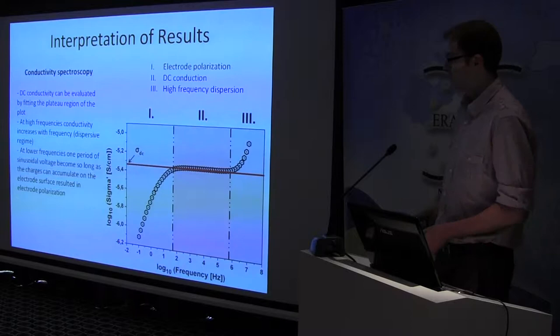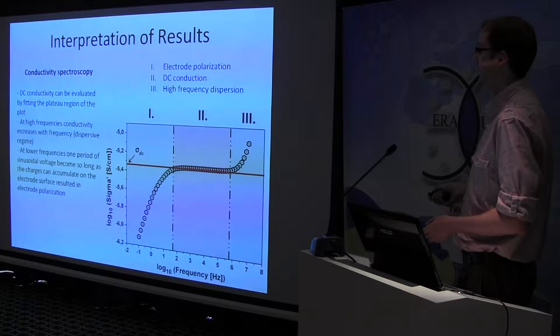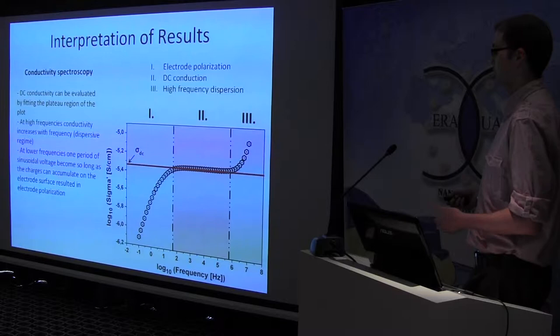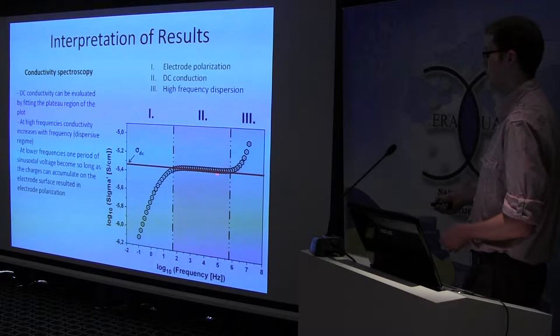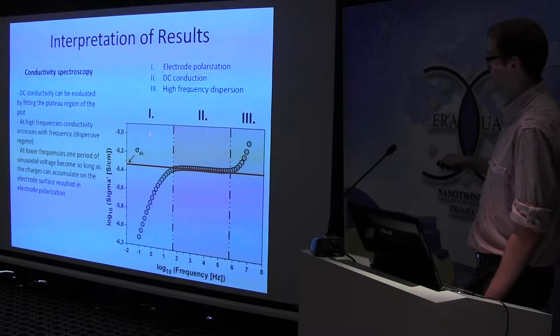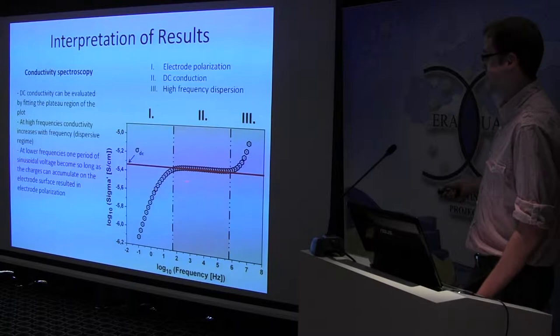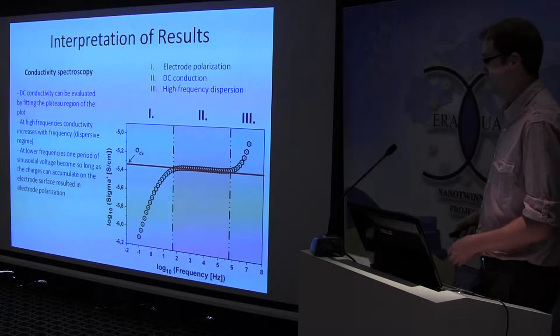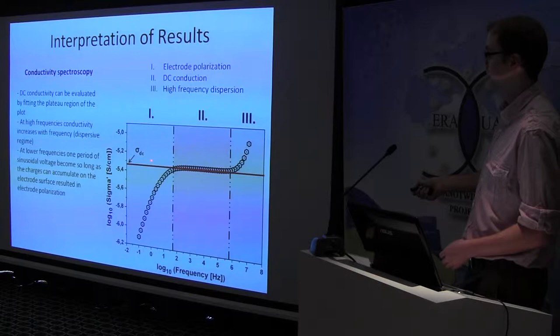Conductivity spectroscopy can be deployed to support our impedance spectroscopic results. And here you can see a conductivity spectrum of a well-conducting material. And this spectrum can be divided into three different regions. This region is the high frequency dispersion. This middle region is called the DC plateau region. And here you can find the electrode polarization region. From this spectrum, the DC conductivity of our sample can be easily obtained by the fitting of this region. And the intercept on the ordinate will show us directly DC conductivity.